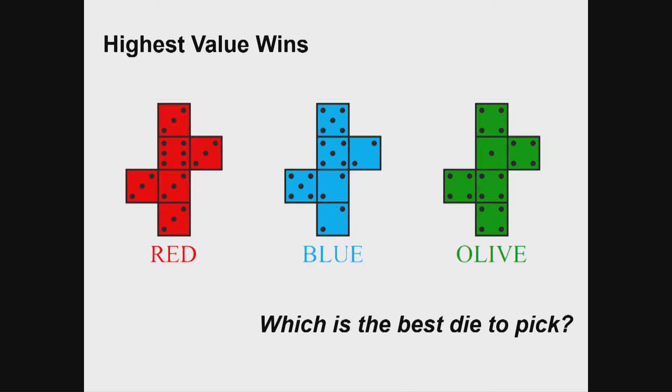If you do the maths, if you look at the probability, it turns out that red is a better choice than blue, has a better chance of winning. But in the same way, blue has a better chance of winning than olive. But the surprise is that olive is better than red, which means that the probabilities go round in a circle, kind of like an Escher staircase of probabilities.